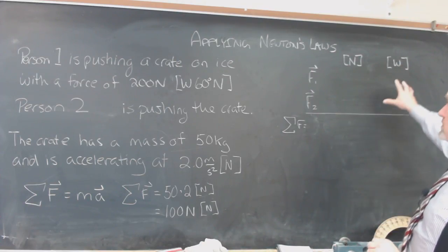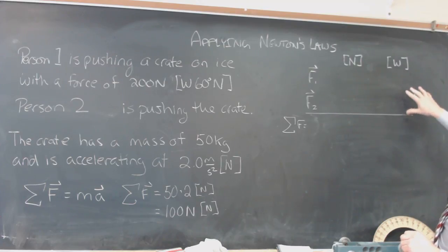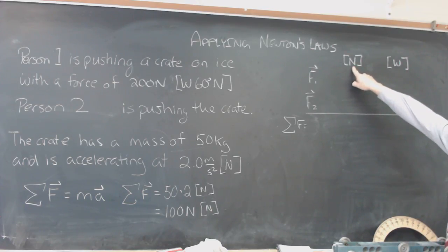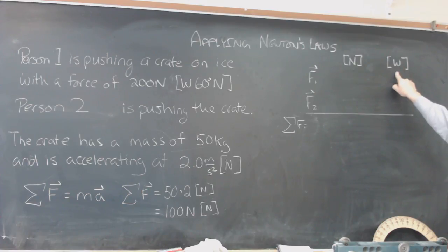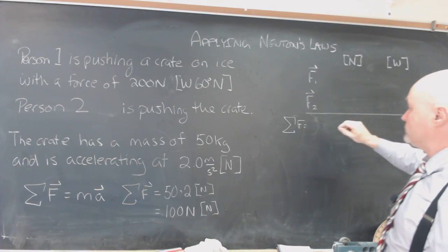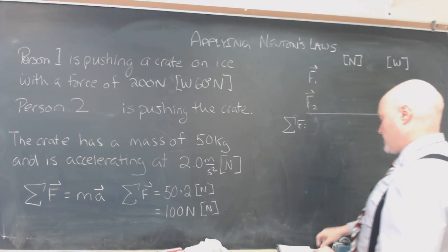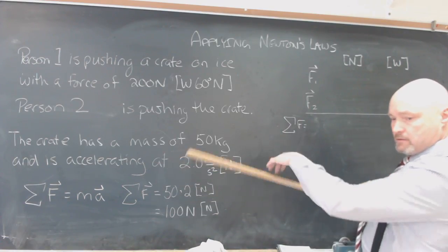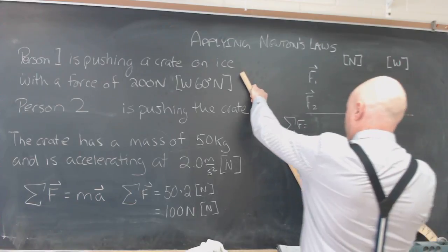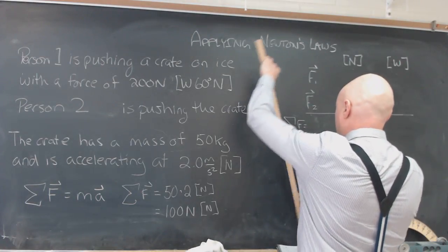When we're dealing with forces and components, I recommend that you use one of these tables. For this problem, we're going to take north as positive and we're going to take west as positive as well. And so the first person is actually pushing on an angle. And so we'll try and figure out what the components of that force are.